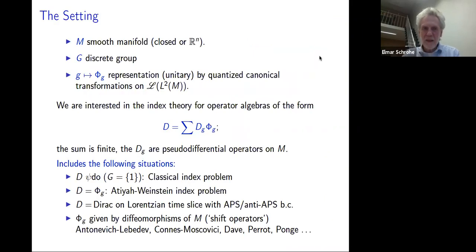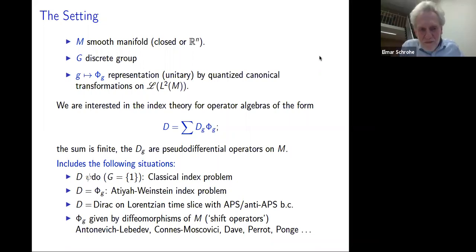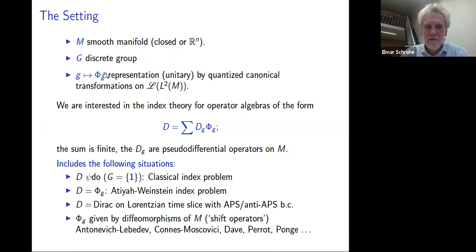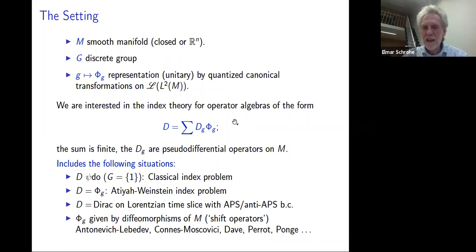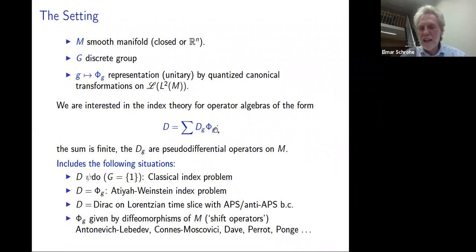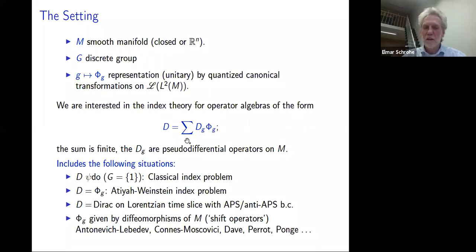Let me start with the setting. We have a smooth manifold M, which will always either be a closed manifold or Euclidean space. Then we have a discrete group, and this group acts on L²(M) by quantized canonical transformations. So this map G to φ_G is a representation by unitary quantized canonical transformations. We're essentially interested in the index theory of such objects.